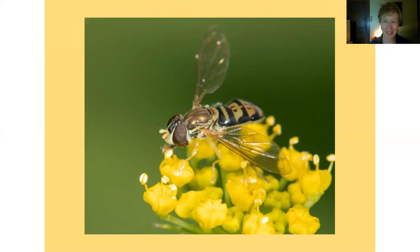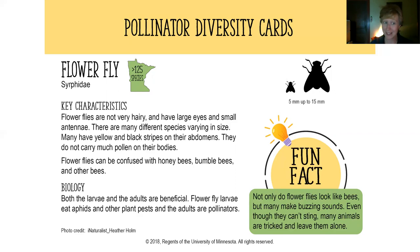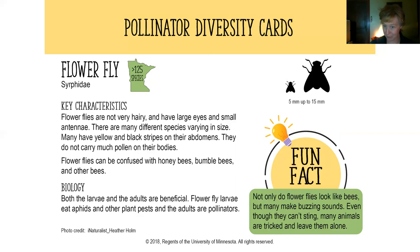Next is the flower fly. There are over 125 different species of flower flies, all in the family Syrphidae. Flower flies are not very hairy, have really large eyes and small antennae, and show a lot of variation in size and coloration — many are yellow with black stripes on their abdomen. A notable aspect of their biology is that both larvae and adults are beneficial: the larvae are predacious on insect pests like aphids, while the adults are pollinators, giving you a double benefit of pest control and pollination.